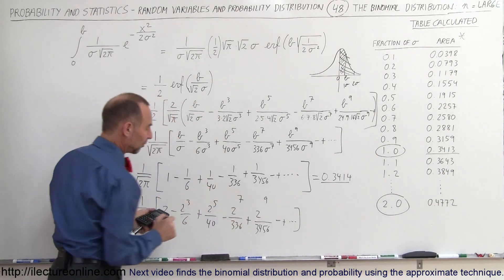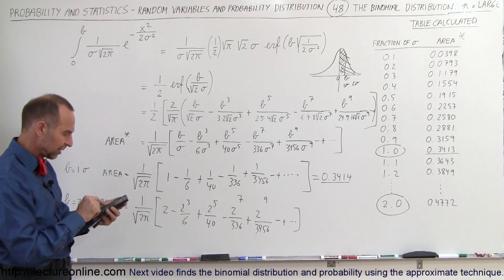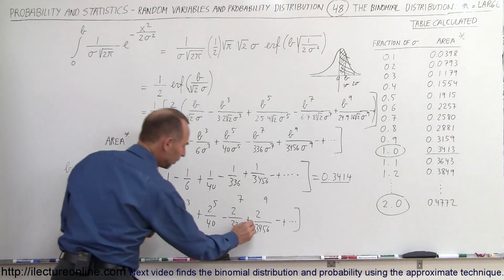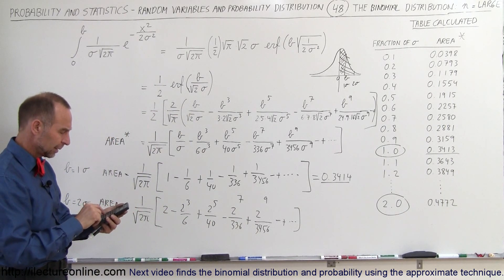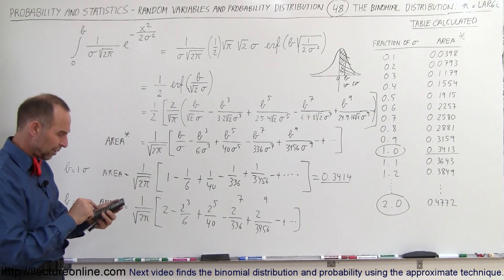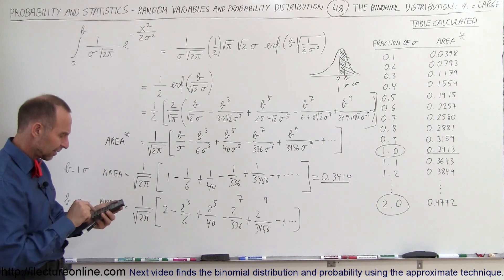Minus, two to the seventh power is 128, that would be 128, divided by 336, plus two to the ninth power, two to the ninth power, which is 512, divided by 3456, equals.